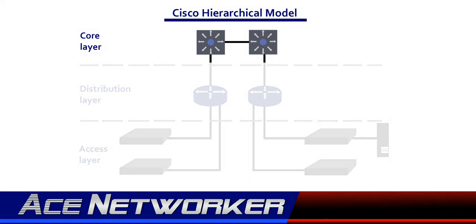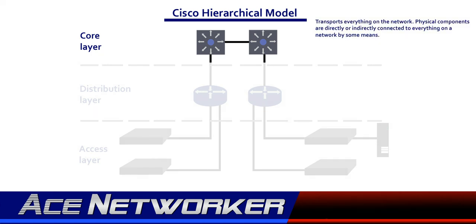The first layer is the core layer, or what many refer to as the backbone of a network. The core layer defines the literal core of a network. This is the layer responsible for transporting the majority of the traffic on a network, and its physical components are connected to everything peripheral on the network, either directly or in most cases indirectly. The core layer is responsible for transporting large amounts of traffic as quickly and reliably as possible.